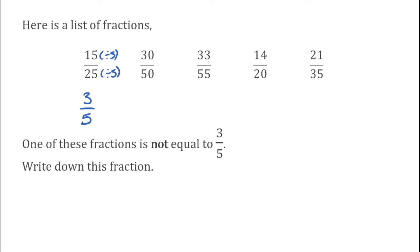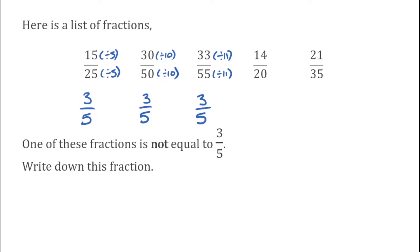For the next one, 30 over 50, the highest common factor is 10. Dividing the top by 10 gives us 3, and 50 divided by 10 is 5 — so that one is also equivalent to 3 fifths. For our next one, 33 over 55, the highest common factor of both is 11. 33 divided by 11 gives me 3, and 55 divided by 11 gives me 5. Again, that one's equal to 3 fifths.